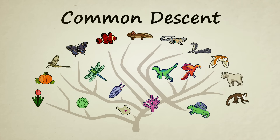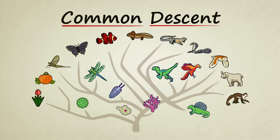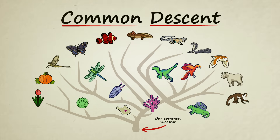Common descent is the idea that all living things on Earth are related — they descended from a common ancestor. Through the gradual process of descent with modification over many, many generations, a single original species is thought to have given rise to all the life we see today.